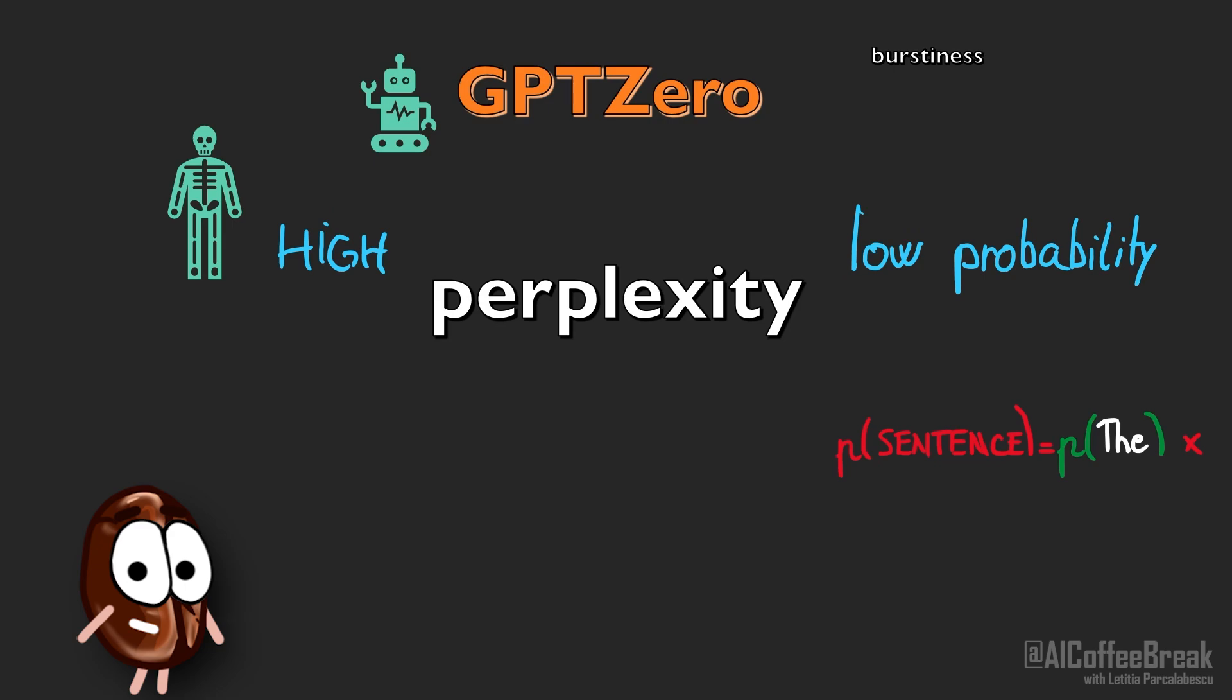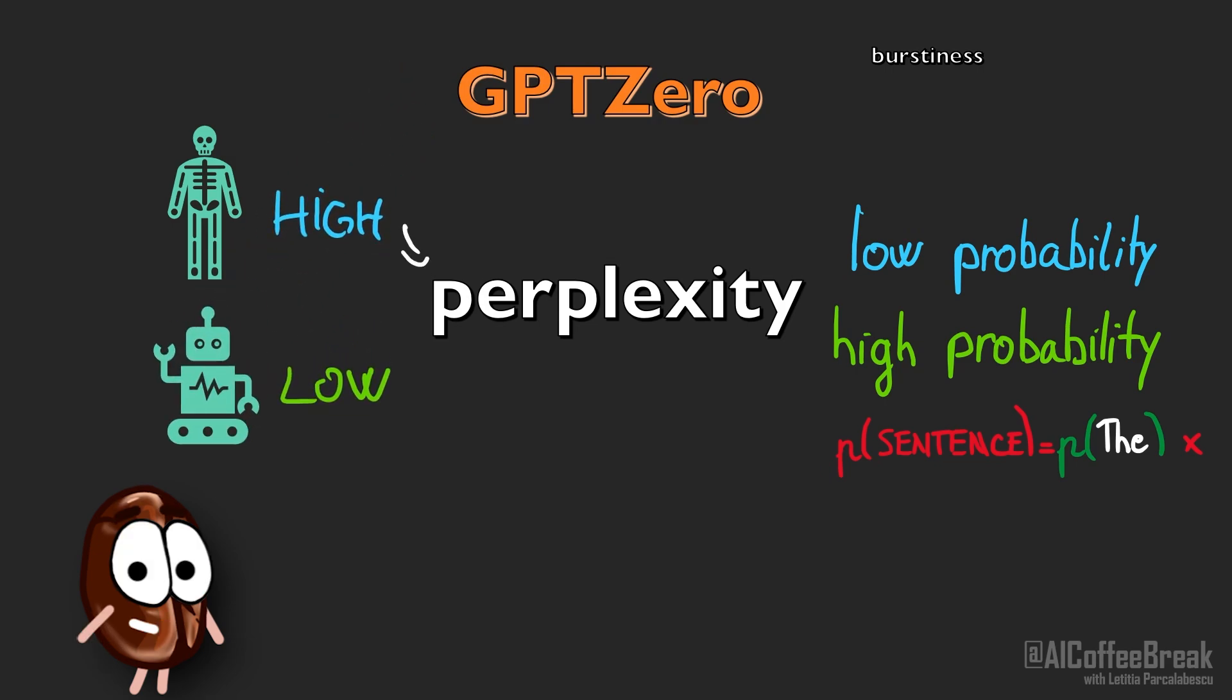So, GPT-0 assumes that human written text has a high perplexity for the language model. In turn, a language model generated text would have low perplexity, because the high probability says that it is exactly the kind of text the model would have generated.